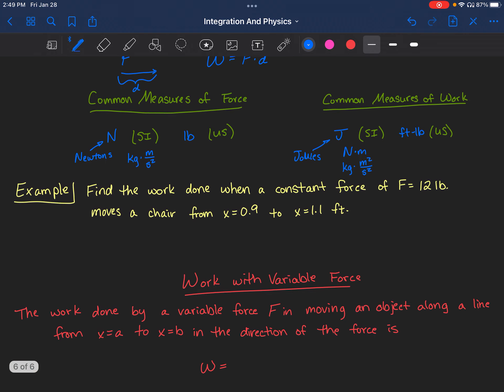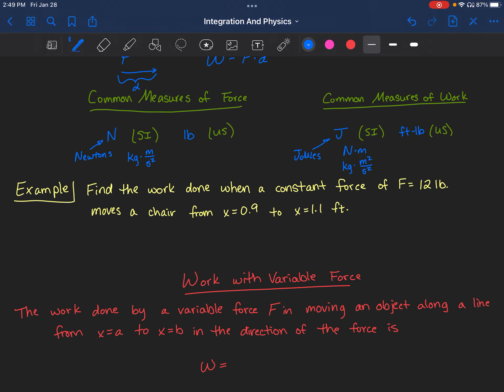In our first example, I want to find the work done when a constant force of 12 pounds is exerted on a chair to move it from x=0.9 to x=1.1 feet. Notice the total distance this chair is traveling is 0.2 feet. So the work done is 12 pounds times 0.2 feet, which gives 2.4 foot-pounds of work.